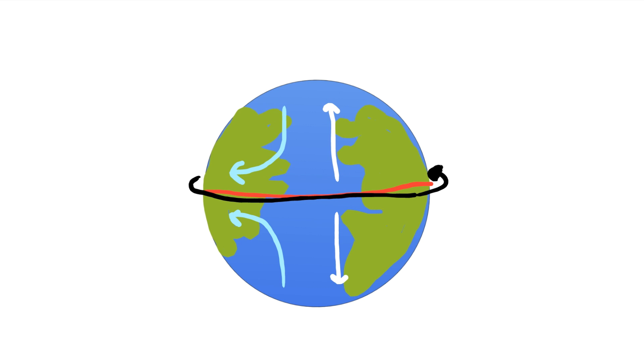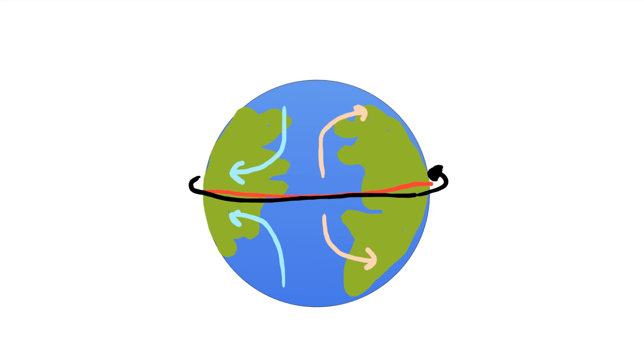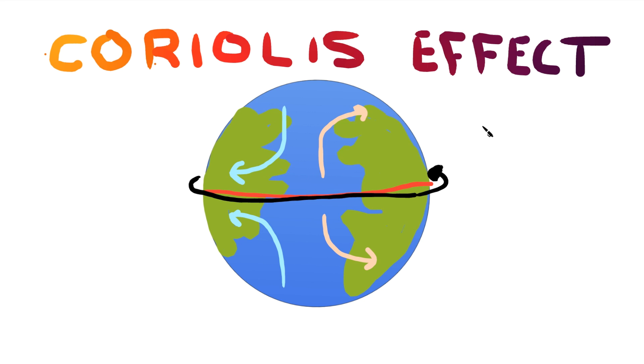In the latter, the surface below the wind spins slower as it approaches the poles. The wind starts off with a strong momentum in the Earth's rotational direction that stays with it as it goes above slower moving surfaces. This momentum makes the wind go ahead of its ideal path. So now we've established that winds curve. This phenomenon is known as the Coriolis effect.